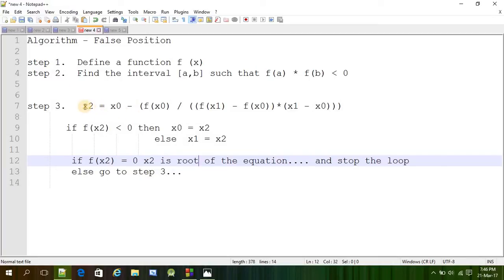Then again we are going to find out a new x2 because intervals have changed now. Because at least x0 or x1, any of those values should be changed after one iteration. Then we are going to find out a new x2 that is closer to the root. And then we are going to do the same thing until we get the value of x2 which is f of x2 is 0.